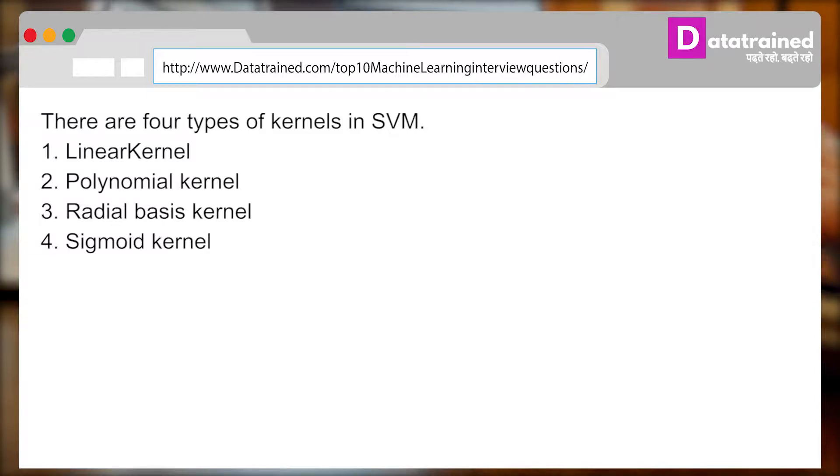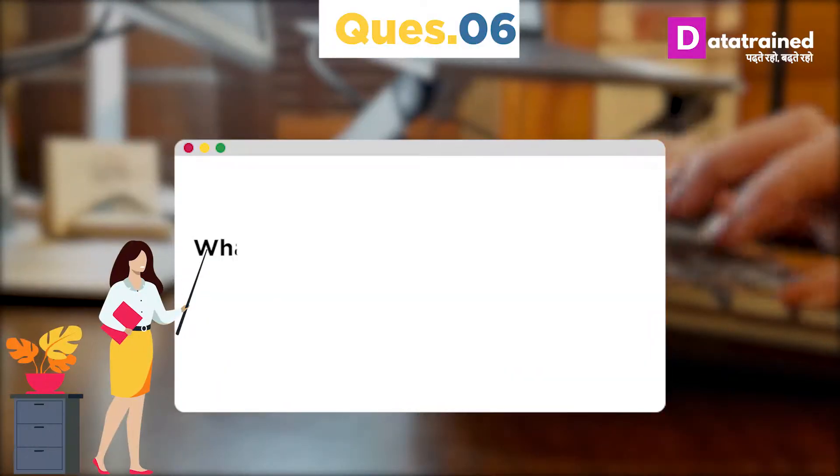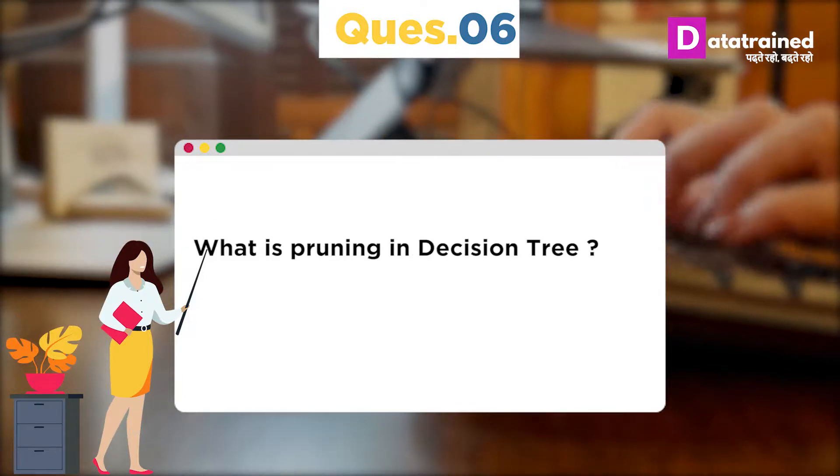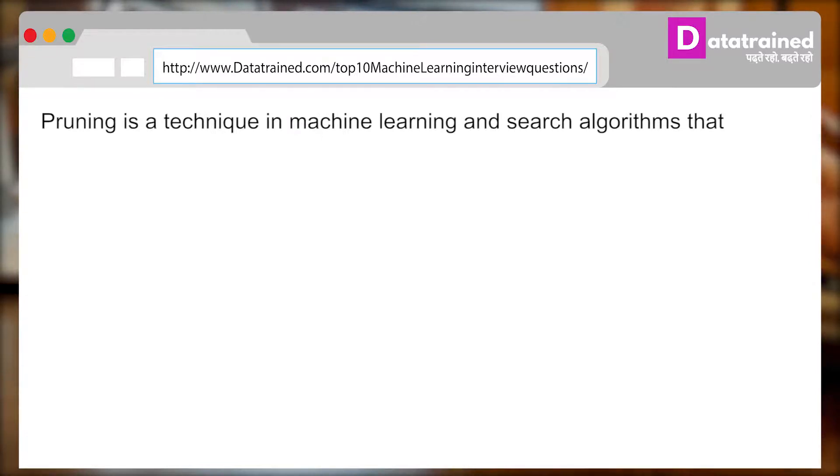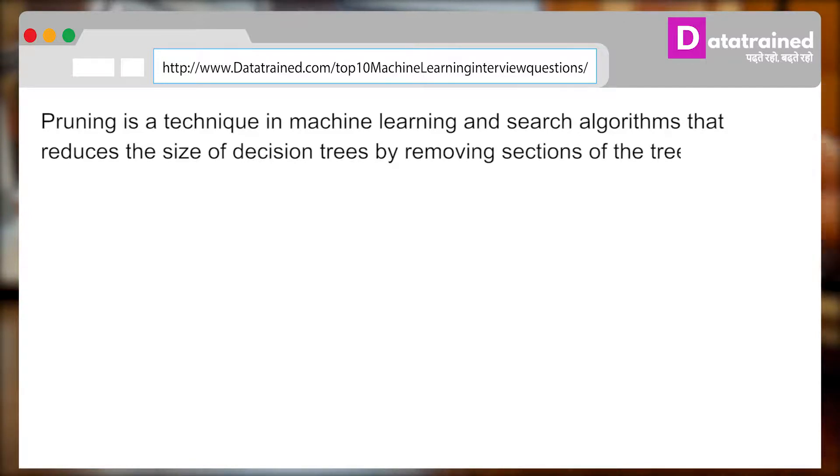Now, the next probable question can be: What is pruning in decision tree? And you can answer: Pruning is a technique in machine learning and search algorithms that reduces the size of decision trees by removing sections of the tree that provide little power to classify instances.